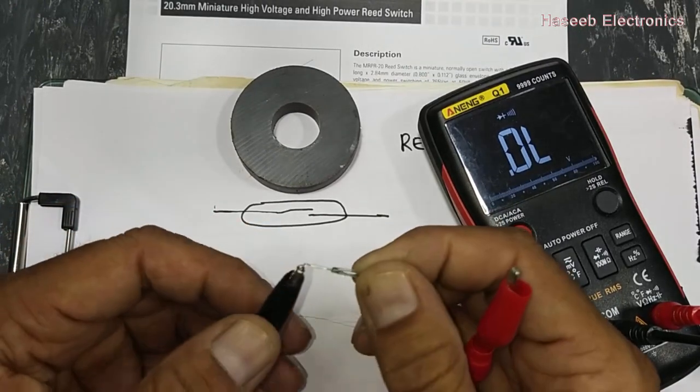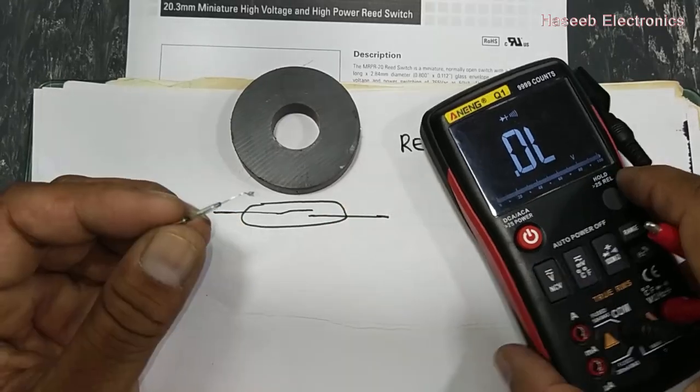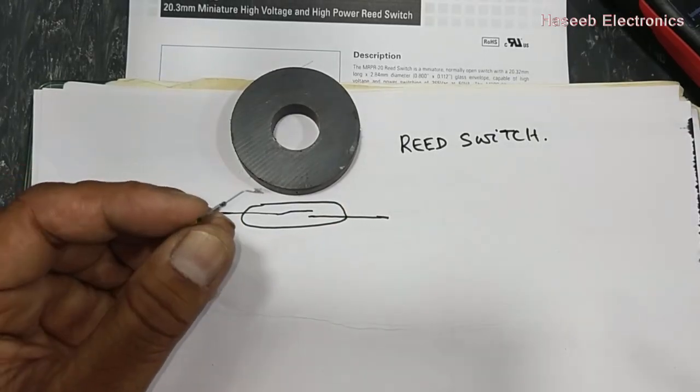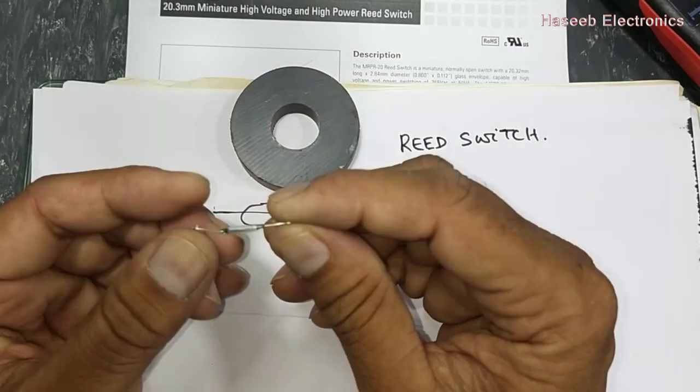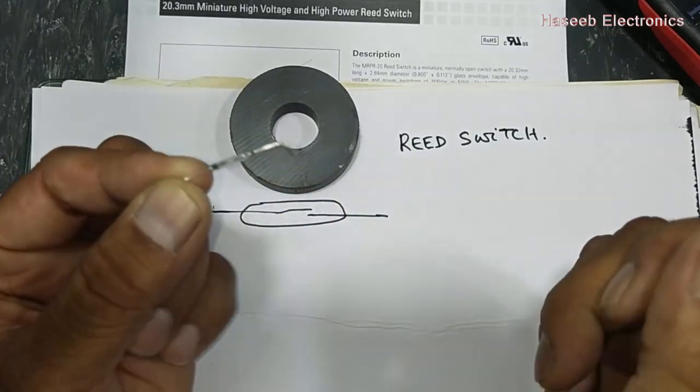So that the contact will not take corrosion and it will not allow to build carbons and oxides. Because it is in a glass-shaped capsule and it is filled with nitrogen gas.